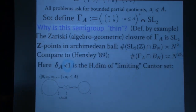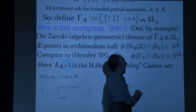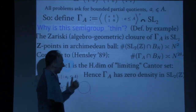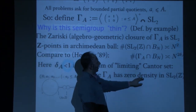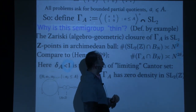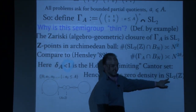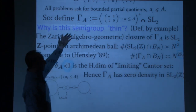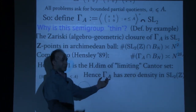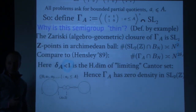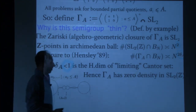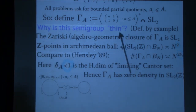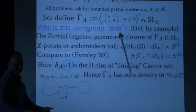Thin means zero density in the integer points of the Zariski closure. For SL₂(ℤ), the count in a ball is ~N²; for Γ_A, it's ~N^{2δ_A} with 2δ_A < 2. If the object is a group, this is equivalent to the classical definition of a thin group.